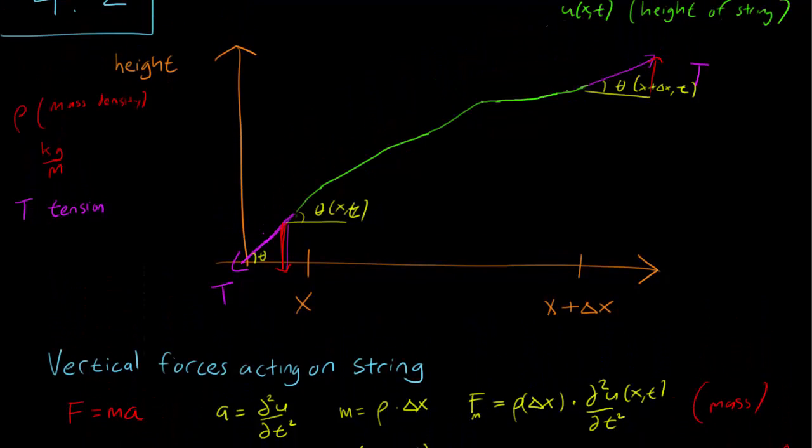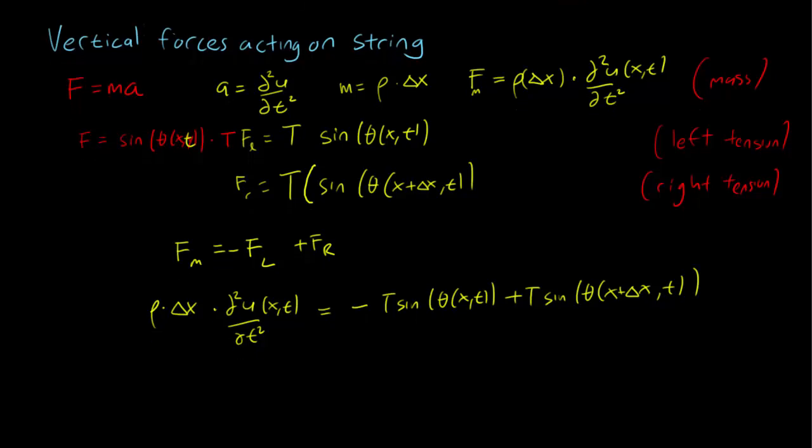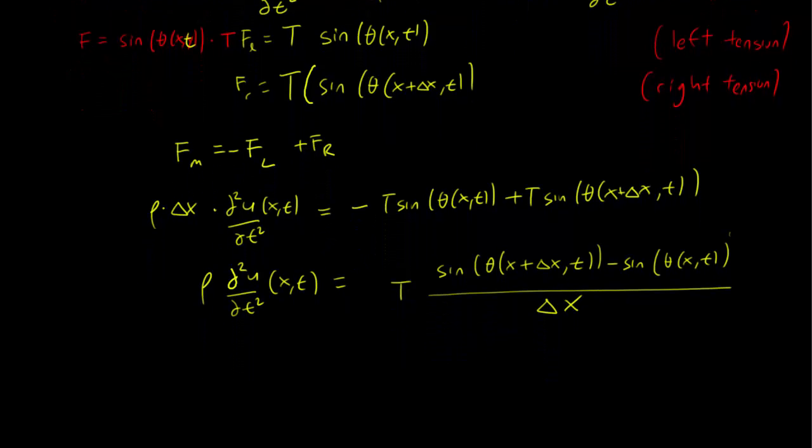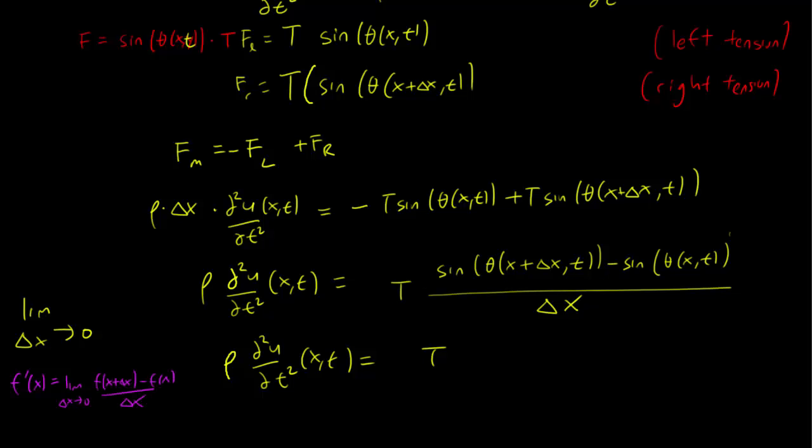Remember that delta x is this small section of the string, and we want to take the limit as delta x goes to zero. So let's see what happens. First we divide by delta x and we end up with this equation, moving the delta x to the right hand side. Now we take the limit as delta x goes to zero. Nothing happens on the left. But on the right, remember that by the definition of the derivative, the derivative is the limit as delta x goes to zero of f(x+delta x) minus f(x) over delta x. That's the definition of the derivative, and this is exactly what we have on the right hand side.